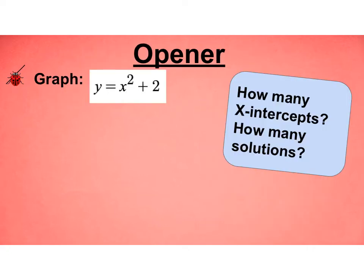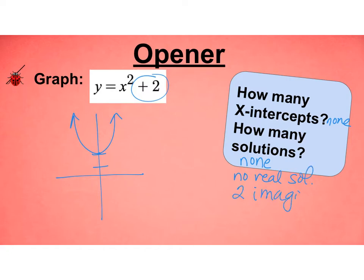Here's our opener. We want to think about graphing this parabola y = x² + 2. We know this is a parabola shifted up 2 using transformations. Also, a is positive so it opens up. If I asked how many x-intercepts there are, you'd probably say none. How many solutions? Probably none. However, what you really mean is there are no real solutions, and we're going to learn today there are actually two imaginary solutions.